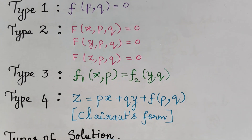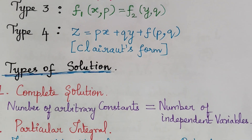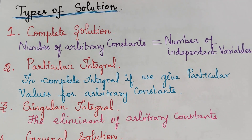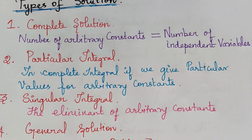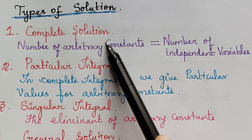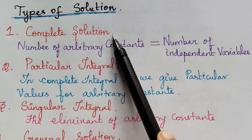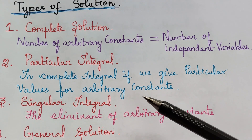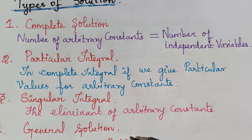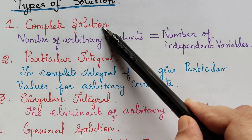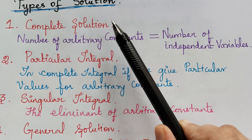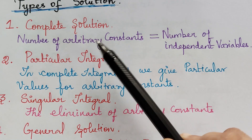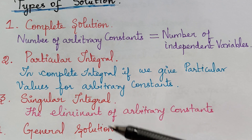Now before we go to type 1, we shall see the types of solutions we have to find for a partial differential equation. First, we have to find the complete solution, and after finding the complete solution, we have to find the singular integral and the general solution. This complete solution is also known as complete integral, and the problem is said to be complete only if you find the remaining two solutions.